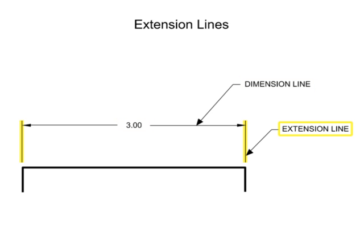Extension lines are used to indicate the extension of a surface, or to point to a location outside the part outline. They start with a short, visible gap from the outline of the part, and are usually perpendicular to their associated dimension lines. They help illustrate how far a dimension extends.